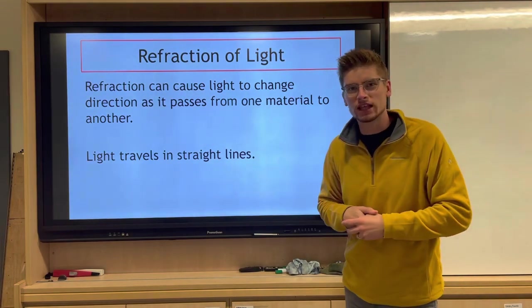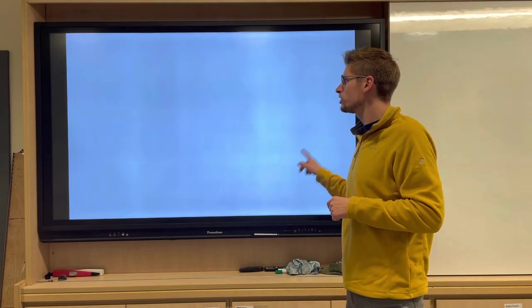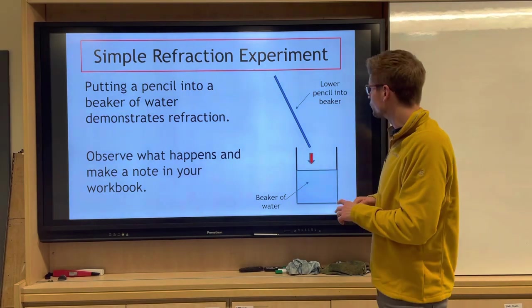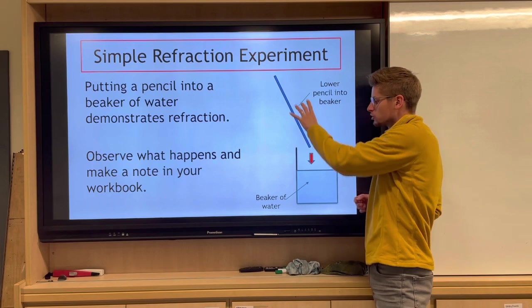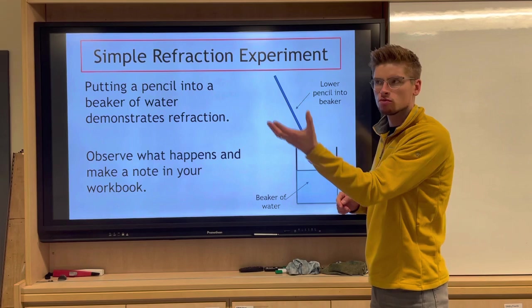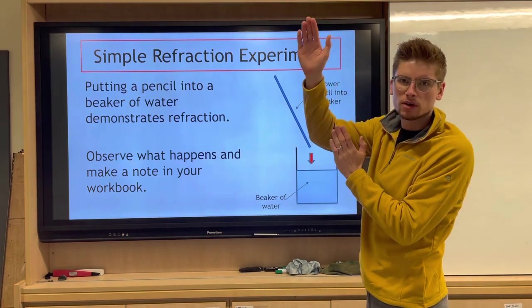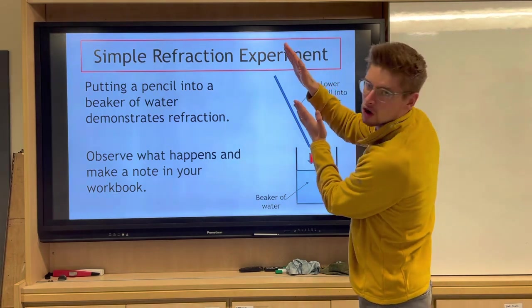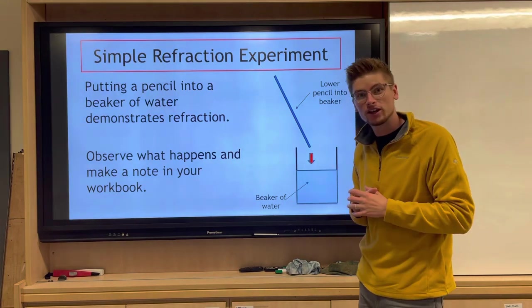Let's show an example of what we mean by refraction. We know that it changes direction as it goes from one material to another. We have a beaker of water here, and if you have a pencil like this and we drop it into the beaker, then lift up the beaker with the water and look at the side on, we'll see that the pencil doesn't quite match up. When it goes into the water, it looks like it's slightly off, so there's a misalignment in what's happening in the beaker.